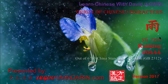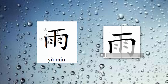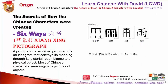It is raining. See the raindrops. 雨 means rain. Look at the character 雨 — it has a special middle and four dots. 雨 is a pictography word, it looks like drops falling from a cloud.